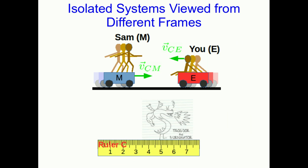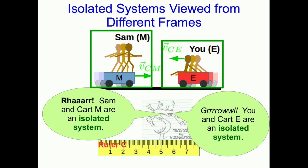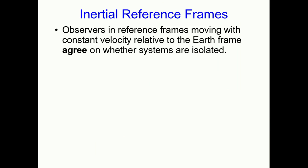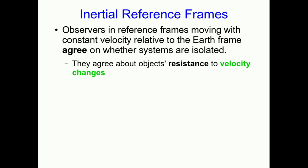Let's bring ruler C back in. Trogdor the Burninator is riding along on ruler C. Relative to ruler C, both you and Sam are moving — but again, both at constant velocity. By exactly the same set of arguments, Trogdor agrees that you are in an isolated system and Sam is also in an isolated system. All observers in reference frames moving with constant velocity relative to the Earth agree on whether systems are isolated — they agree that isolated objects move at constant velocity, or resist velocity changes. We would say they agree about the principle that things have inertia.